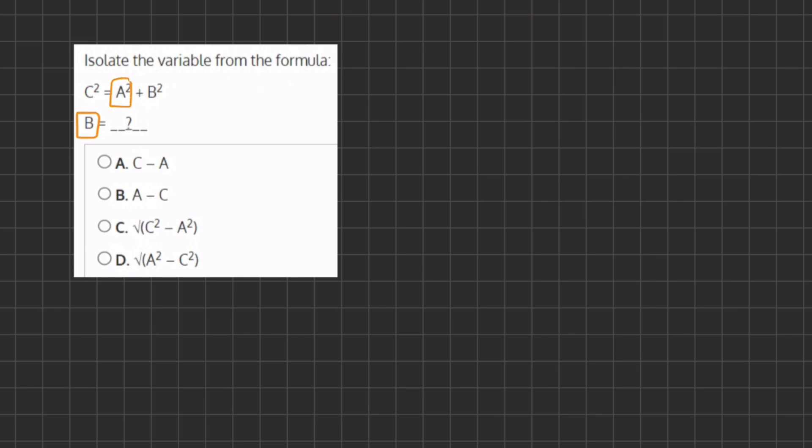So we're going to subtract a squared on both sides and we're going to be left with c squared minus a squared equals b squared.